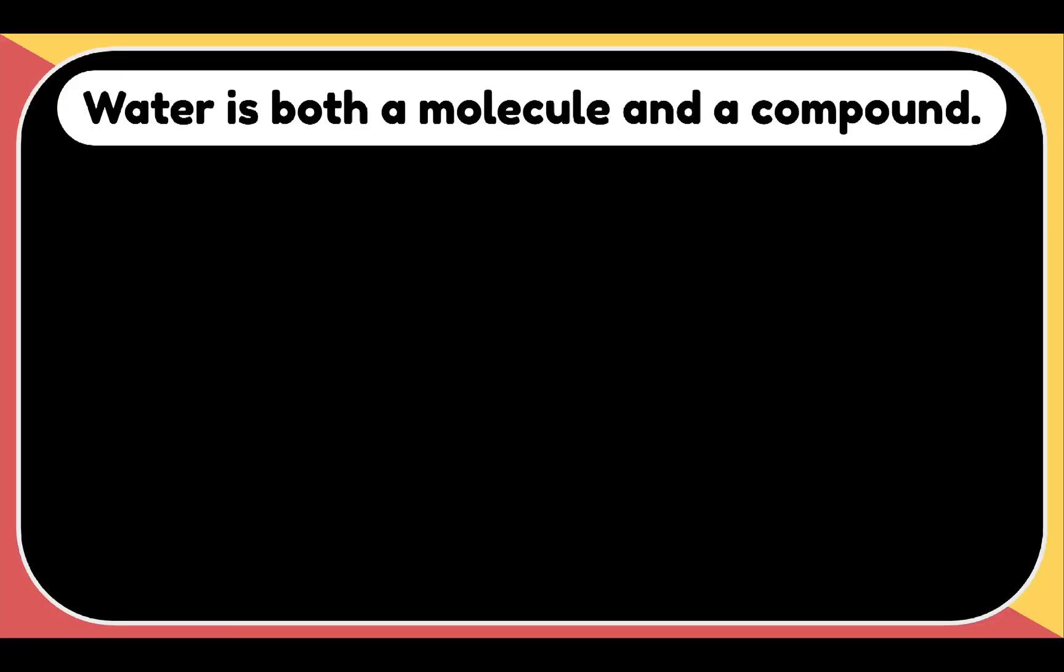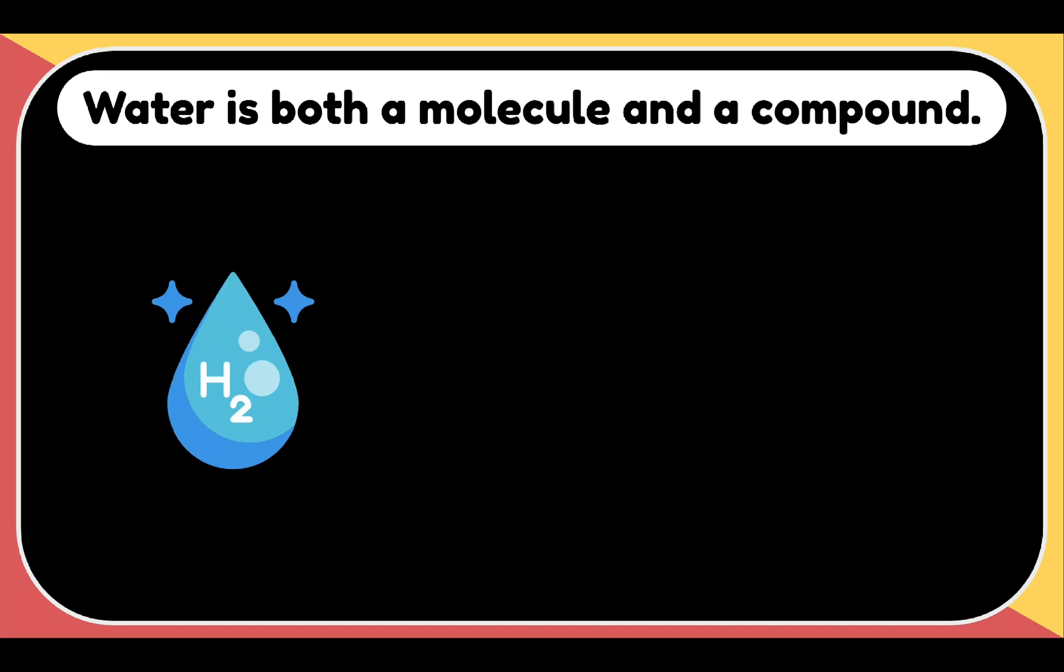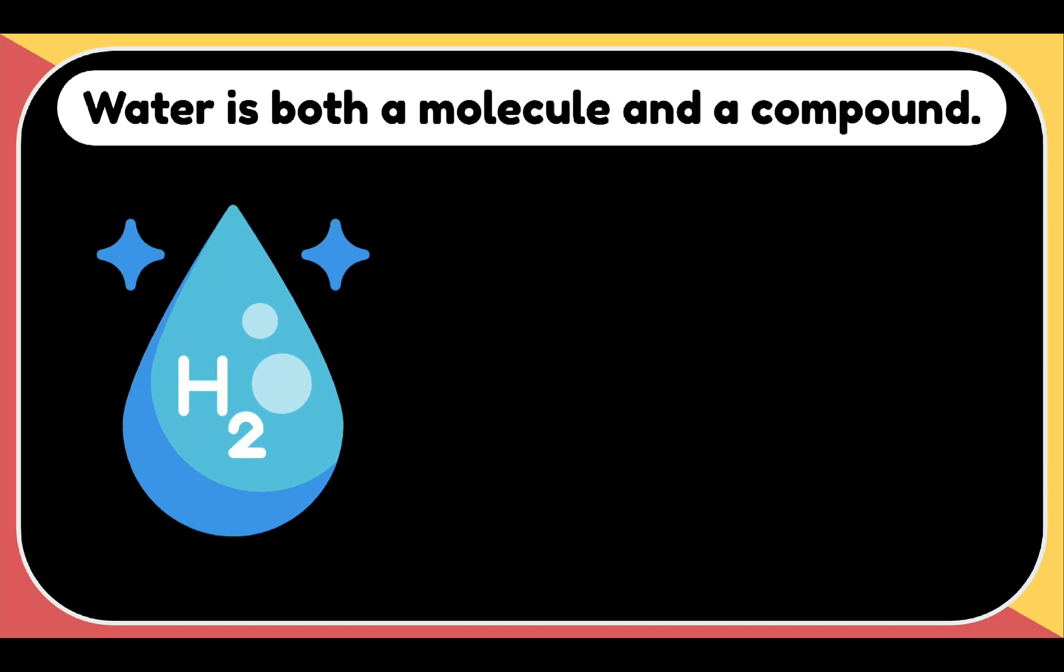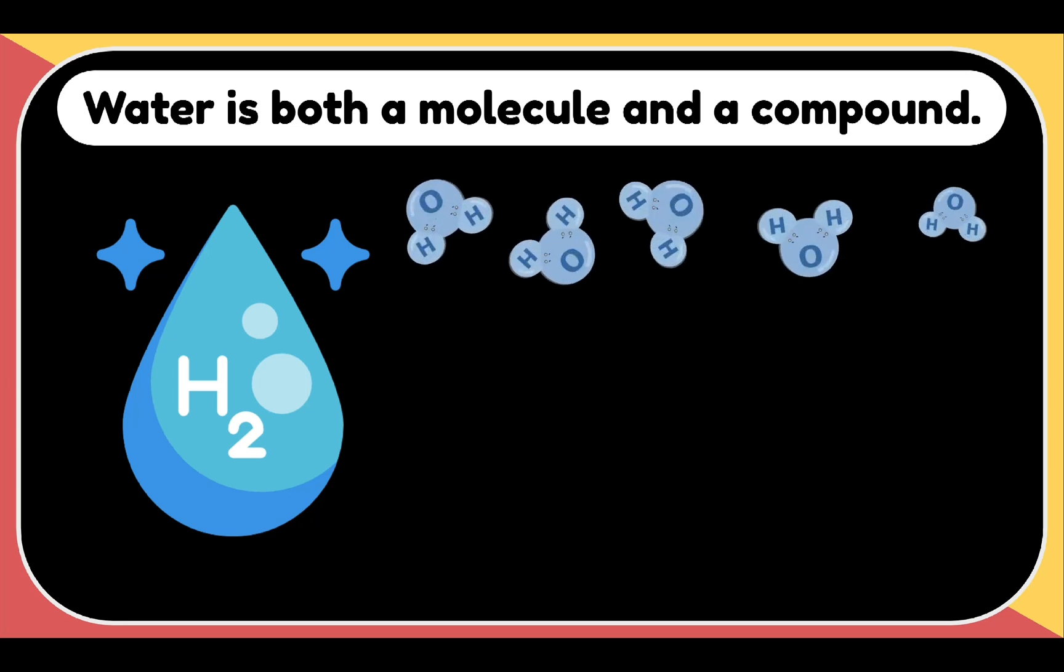Again, a compound has two or more different atoms joined by chemical bonds. The chemical formula for water is H2O, which means each molecule of water consists of one oxygen atom chemically bonded to two hydrogen atoms. Thus, water is a compound.